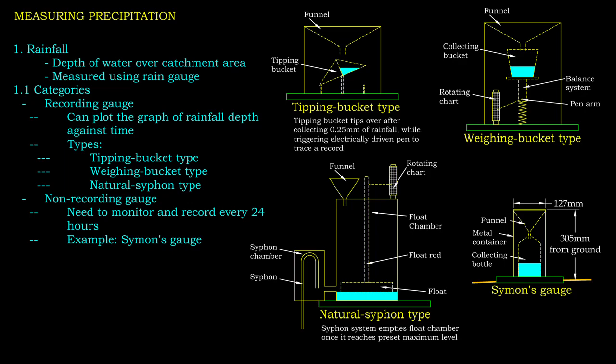For a non-recording gauge, the rainfall is monitored every 24 hours, and the measurement is recorded as the rainfall of the day. An example of a non-recording gauge is Symon's gauge.